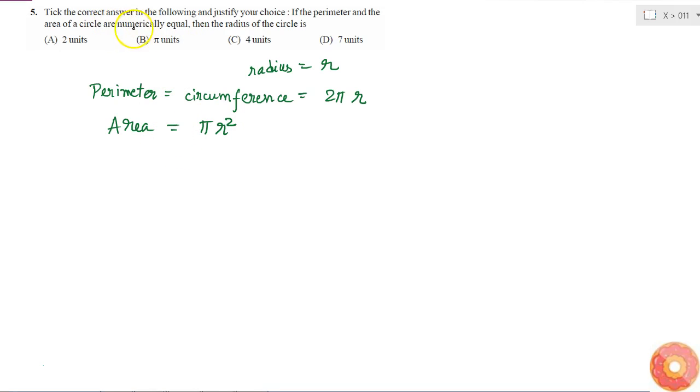These two are numerically equal, meaning leaving the units. We can only say they're numerically equal because the perimeter's units will be meter or centimeter, while the area's units will be meter square, centimeter square, and so on. These two values can never be actually equal, only numerically equal. That means neglecting the units, these two values are equal.